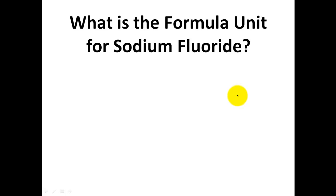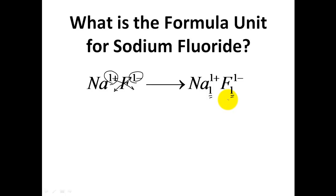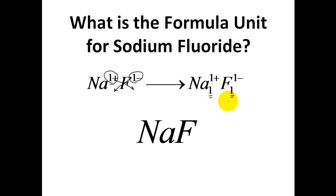Please try drawing the formula unit for sodium fluoride. Sodium is a 1-plus ion and fluorine is a 1-minus ion. Crossing them gives 1s on both sides. Whenever you have 1s, you do not need to write them in the final formula unit. The formula unit is Na₁F₁, written simply as NaF.